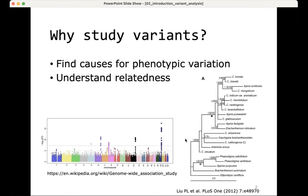The second reason, also related to that, is mainly an application in ecology: to understand relatedness between individuals and between species, and to answer questions about evolution or other ecological questions. For example, with variant data you can make a nice species tree.